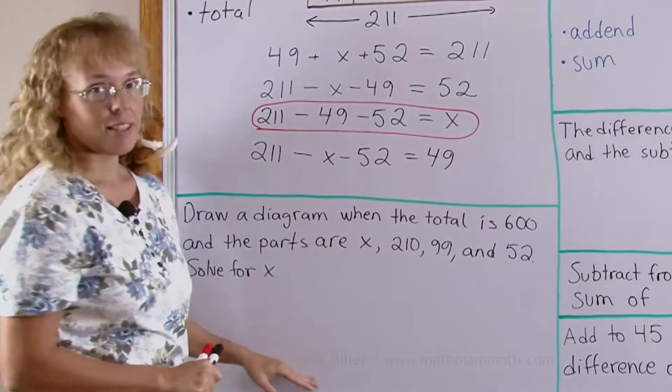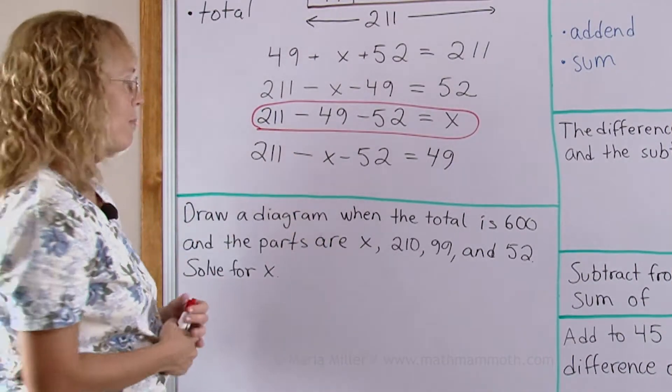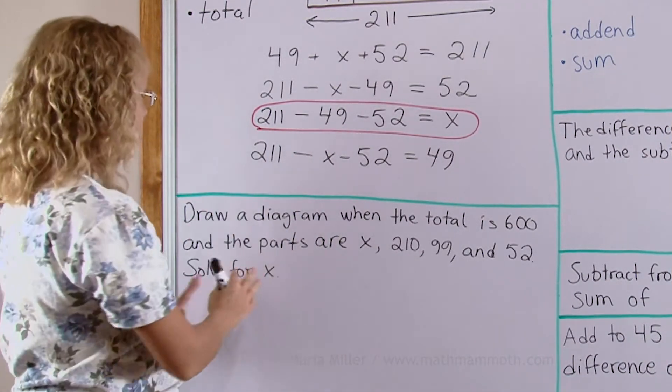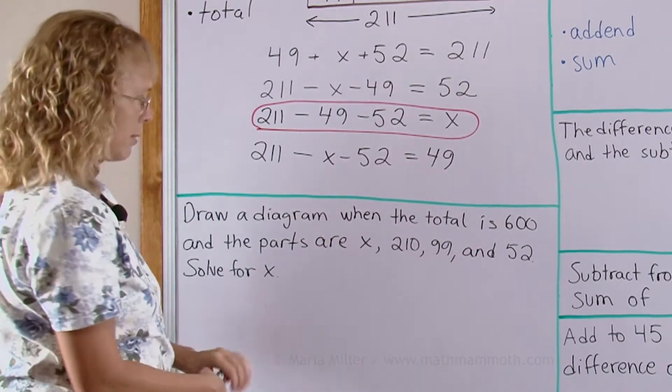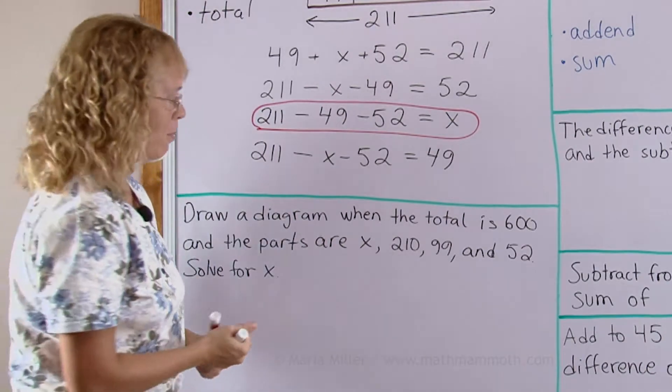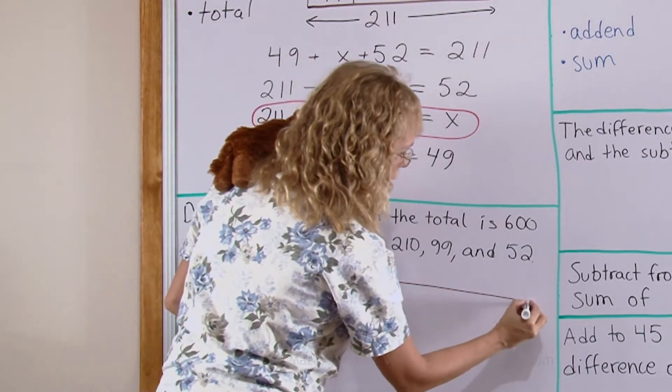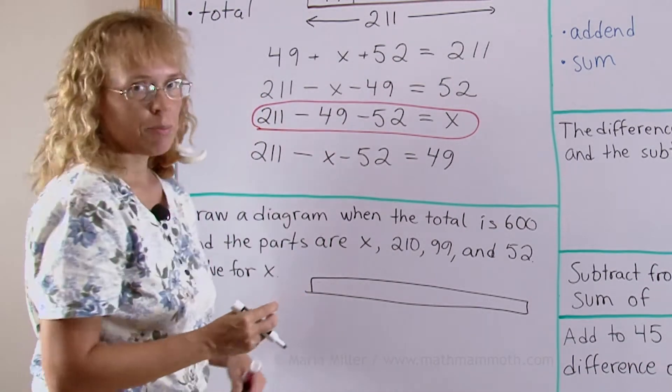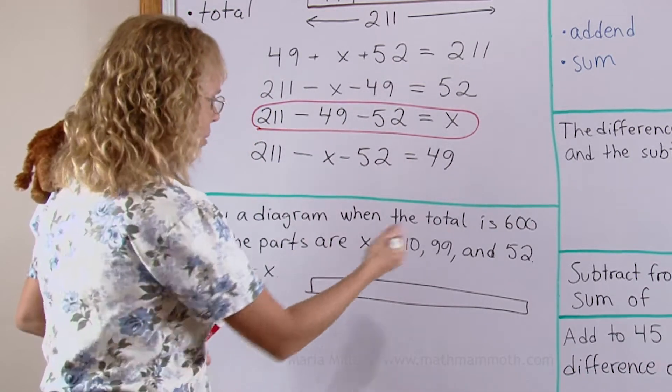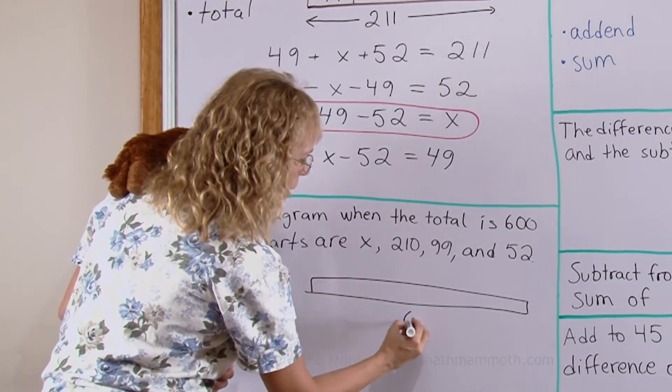And here let's draw a diagram, this kind of a diagram or a model when the total is 600 and the parts are this, this, this and this. Four parts and solve for x. So let me draw the bar model. I just draw a long bar here like a board and divide it into four parts but in unequal parts. Now my total is 600 so let me mark it here. 600 from one end to the other.